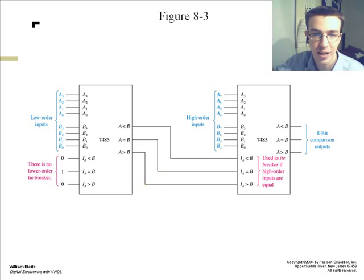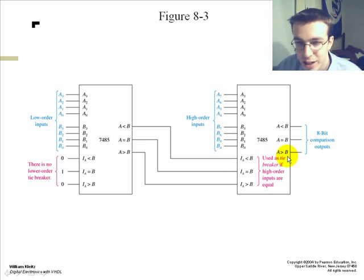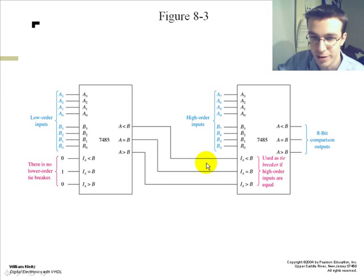This is also a different type. You can take those values and it's used as a tiebreaker if the higher order inputs are equal. And you attach it to your second 7485 chip to correct that.